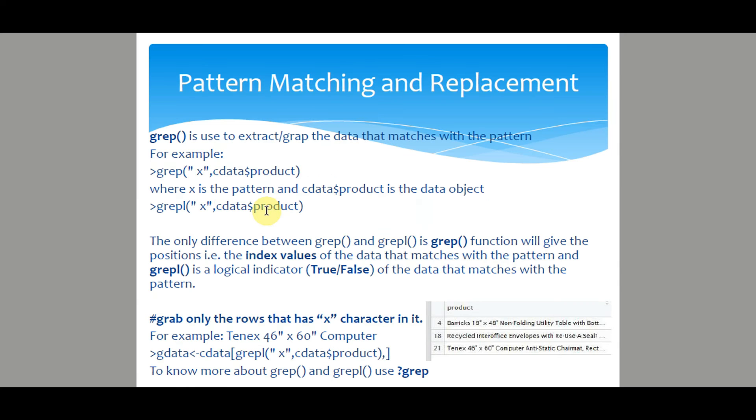Pattern matching and replacement. grep function is used to extract the data that matches with the pattern. For example, grep x then the column name or the R data object, where x is the pattern. The same goes with grepl. The only difference between grep and grepl is grep function will give the positions, that is the index values of the data that matches with the pattern, and grepl is a logical indicator true and false of the data that matches with the pattern.